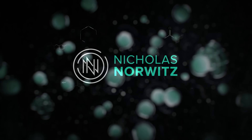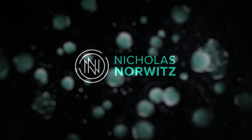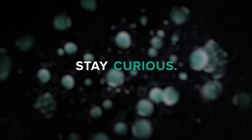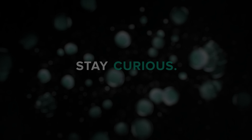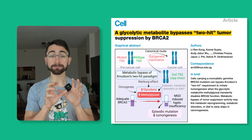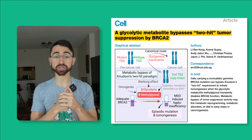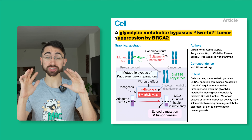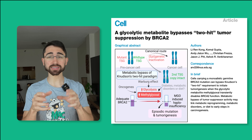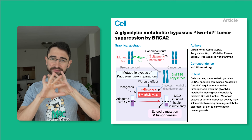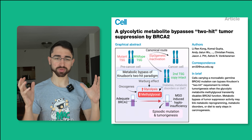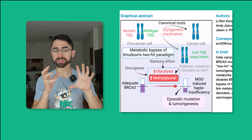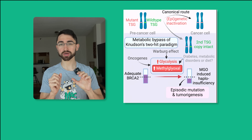Welcome to my channel. Stay curious. The paper of relevance today is entitled, "A Glycolytic Metabolite Bypasses Two-Hit Tumor Suppression by BRCA2." It's a new paper published in Cell — very cool paper, very dense. I'm going to take the 50,000-foot view in this video. Here's the background you need to know.